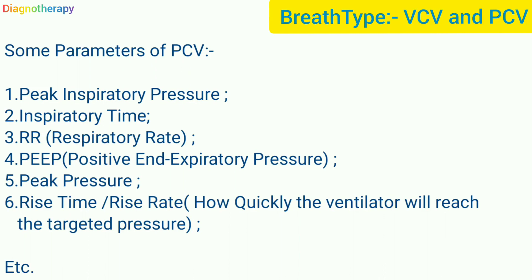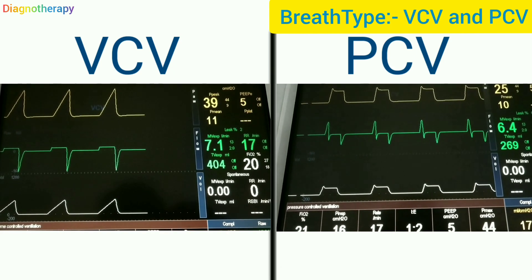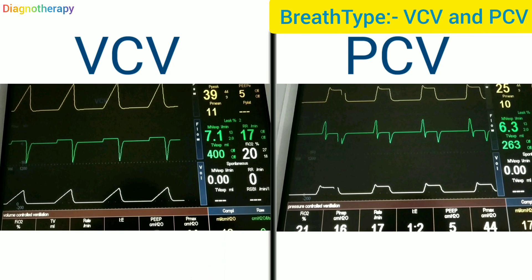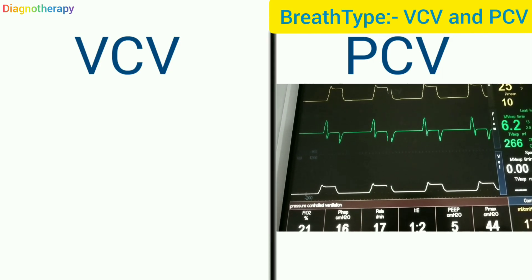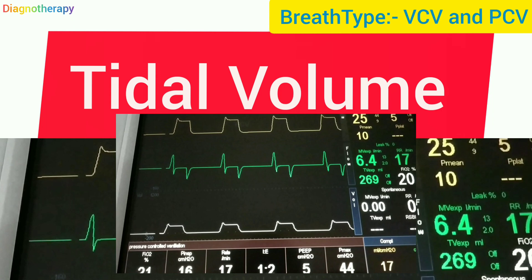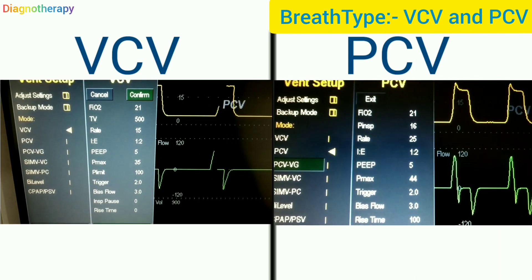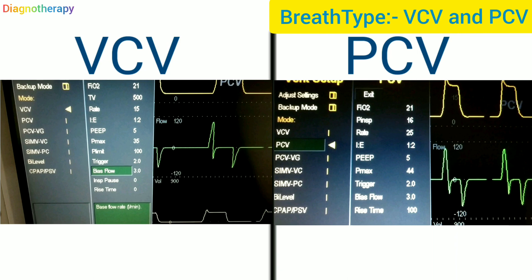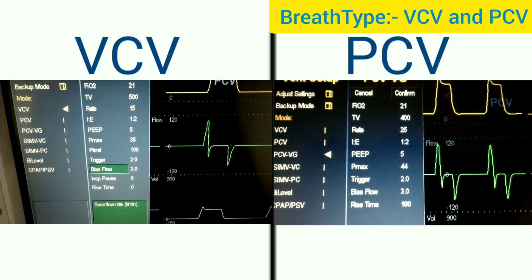Now let's look at the ventilator screens. In volume control ventilation, the ventilator ensures that the set volume is delivered to the patient and continuously monitors whether those settings have been achieved. In pressure control ventilation, the tidal volume shown is the maximum volume of air delivered to the lung before the maximum pressure value is reached. On the left screen is volume control ventilation and on the right is pressure control ventilation. In VCV, tidal volume is the key setting; in PCV, P-max is the main parameter.